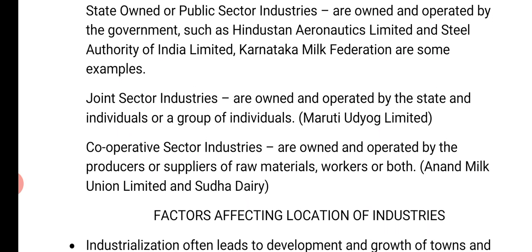Joint sector industries are owned and operated by the state and individuals or a group of individuals, like Maruti Udyog Limited. Cooperative sector industries are owned and operated by the producers or suppliers of raw materials, workers, or sometimes both together, like Anand Milk Union Limited and Sudha Dairy.